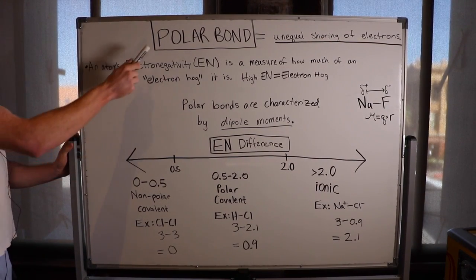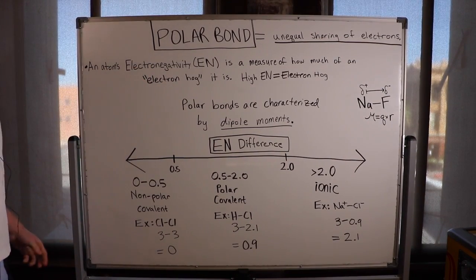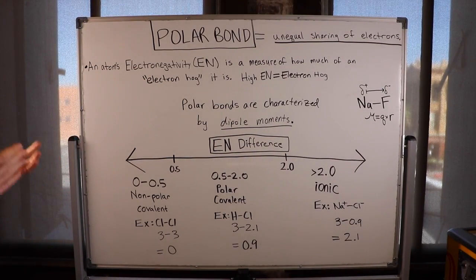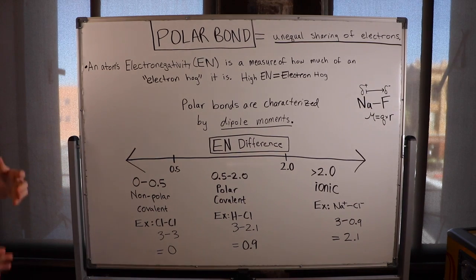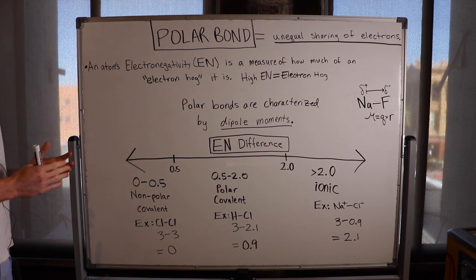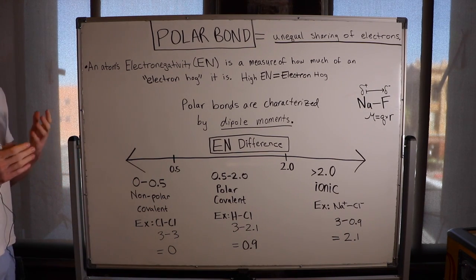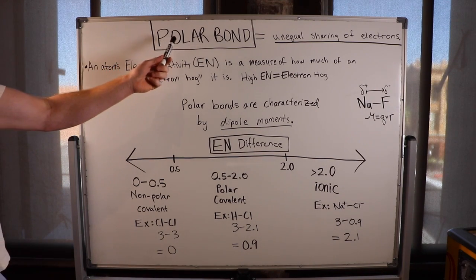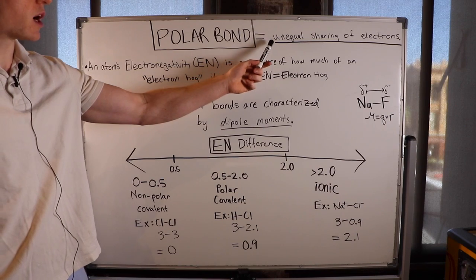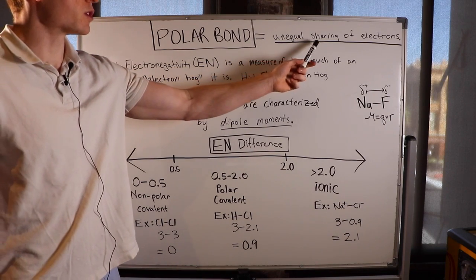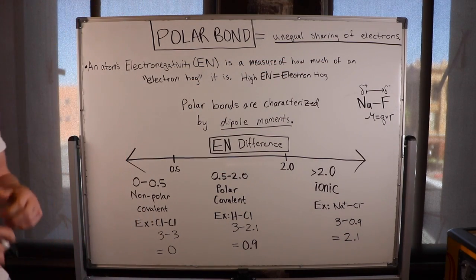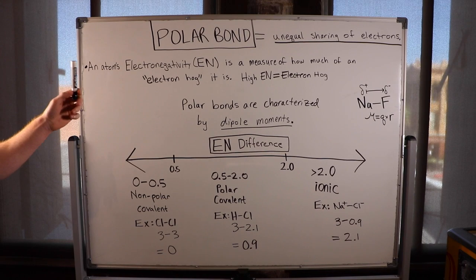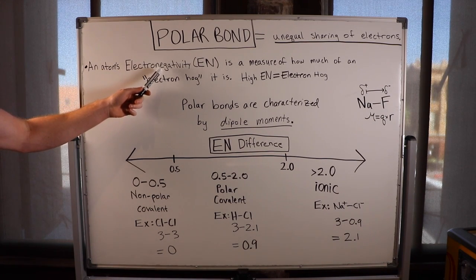In this video we're going to talk about polar bonds. A polar bond is a special type of bond, so let's remind ourselves what a regular bond is. A bond between two atoms is simply when they share electrons, and a polar bond is a special type of bond where there is unequal sharing of electrons. This happens because atoms have different levels of electronegativity.